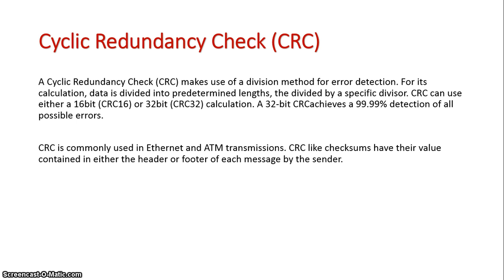CRC has common standards such as CRC 16 and CRC 32, among others. A CRC 32 has a 99.99% error detection success rate. CRC is commonly used on Ethernet and ATM transmissions, and like checksums, the CRC value is sent in the header or footer of a message.